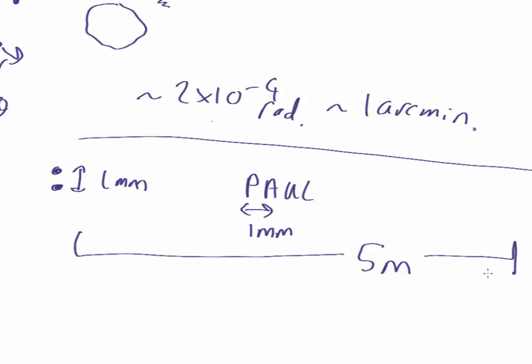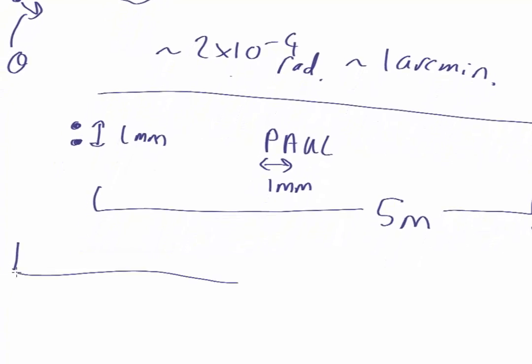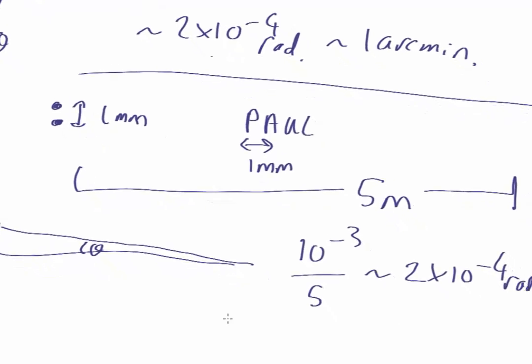So what that means is that the angular resolution of the human eye is about one millimeter over five meters. So using a small angle approximation, that's 10^-3 over 5, which comes out as about 2×10^-4 radians, or about one arc minute.